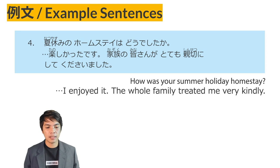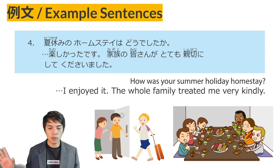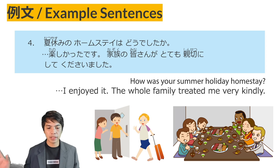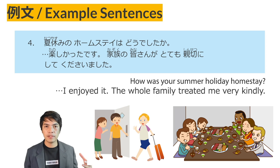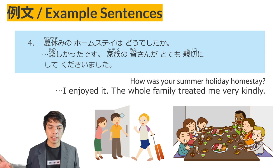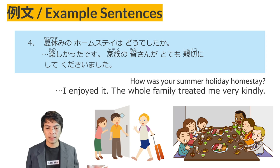Example sentence No. 4: Natsu yasumi no homestay wa dou deshita ka? — How was your summer homestay? Tanoshikatta desu — I enjoyed it, it was very fun. Kazoku no minasan ga totemo shinsetsu ni shite kudasaimashita — Everyone in the family was very nice to me. Shinsetsu ni shite — in a kind way — using the na-adjective ni shimasu pattern. They were very kind to me.